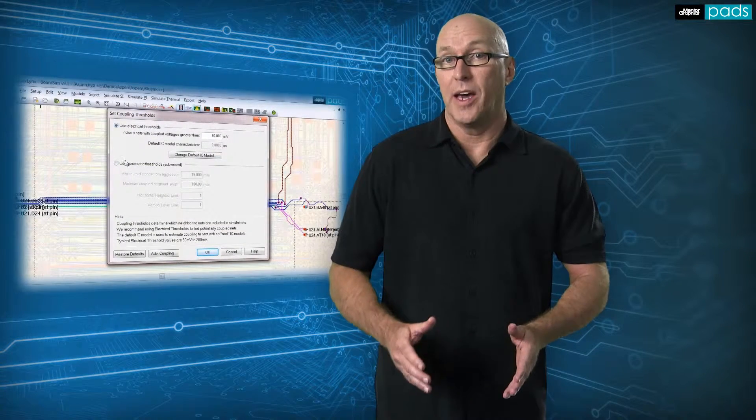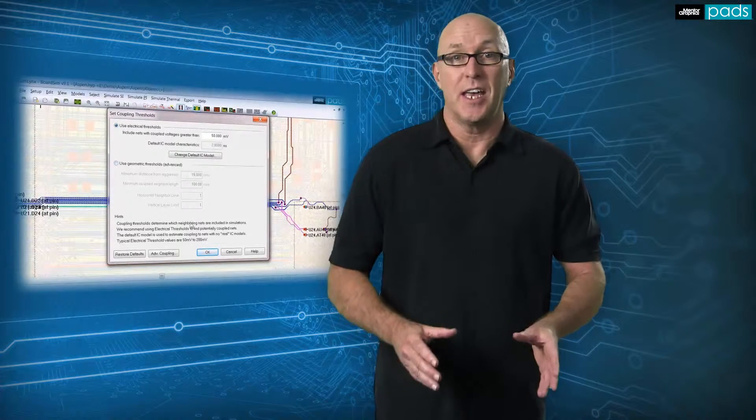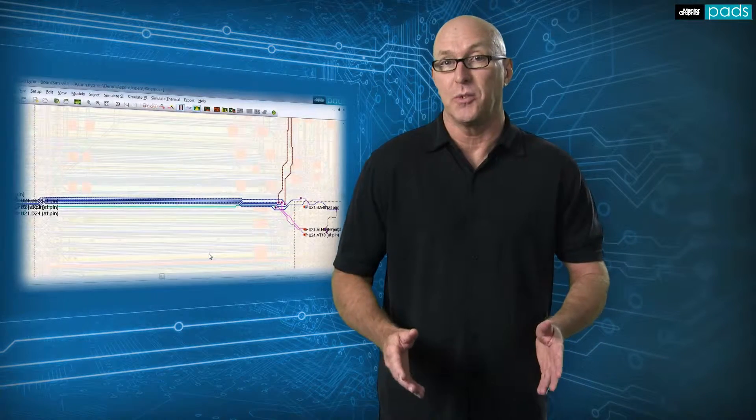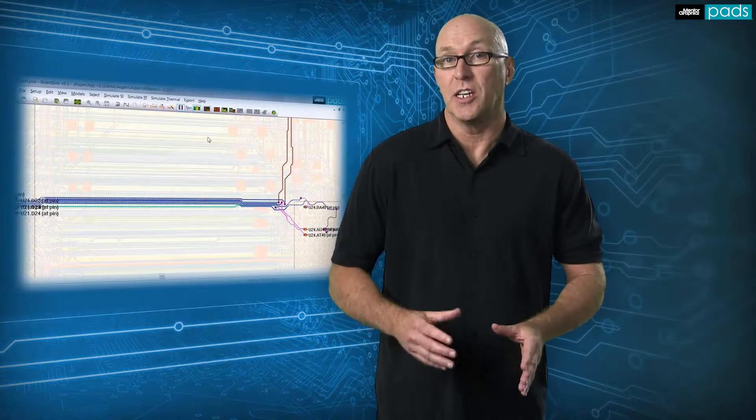Then export those nets to LineSim to edit the coupled sections to eliminate the crosstalk issue, and determine the changes that need to be made to the layout to fix the issue.